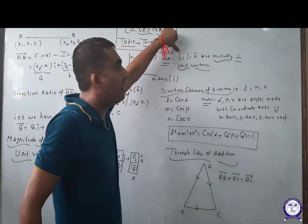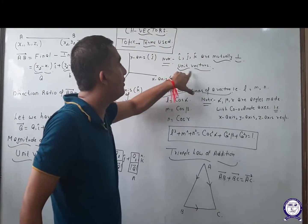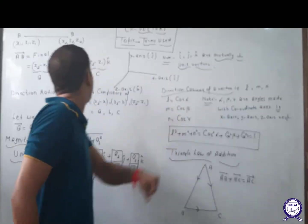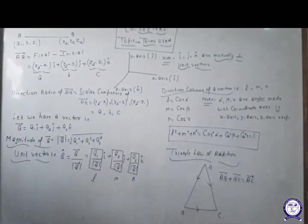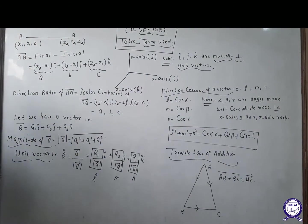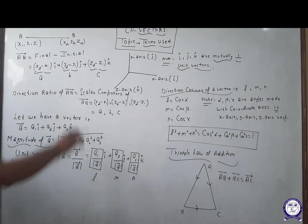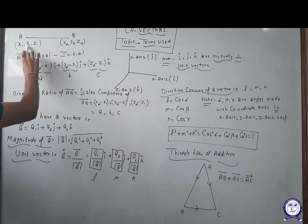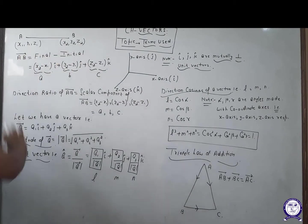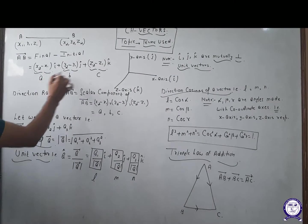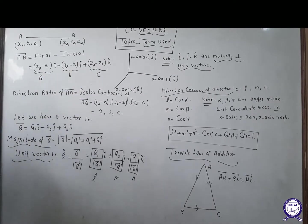Any vector represented by a cap is called a unit vector — a vector having magnitude 1. If we have two points, an initial point and a final point, we can get a vector by subtracting initial from final: subtract x from x, y from y, and z from z, with i-cap, j-cap, and k-cap. It becomes a vector.